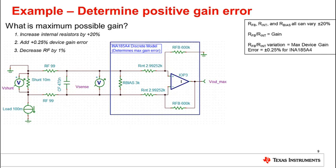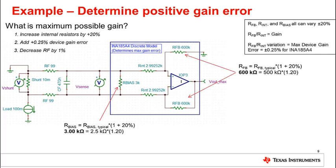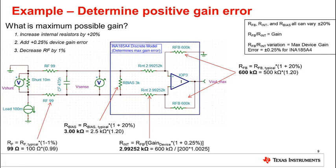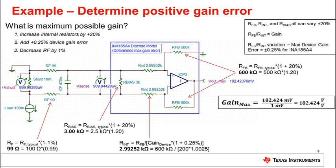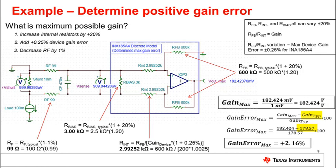Finally, we can assume the worst case negative 1% variation of the input filter resistors. Using these three steps, we run through the calculations and add 20% to RFB and R_bias by multiplying them by 1.2, yielding 600 kΩ and 3 kΩ respectively. We can then calculate Rint using the gain equation, which yields an Rint of 2.99252 kΩ. Finally, we decrease the input filter resistors by 1%. We then perform a DC simulation and determine the gain error. We calculate the maximum worst case gain to be 182.42 volts per volt. Maximum gain error is relative to the typical gain of 178.57 volts per volt, and we calculate the final maximum gain error variation as positive 2.16%.